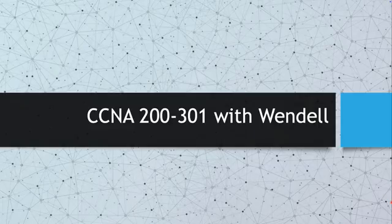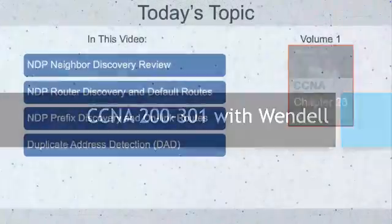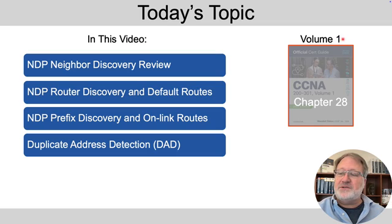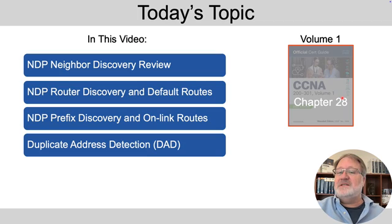IPv6 hosts build routes based on information learned dynamically from nearby routers. We'll look at those in this video and learn about both default routes and on-link routes. This video covers topics found in the Official CertGuide Volume 1, Chapter 28, which is about IPv6 on hosts.